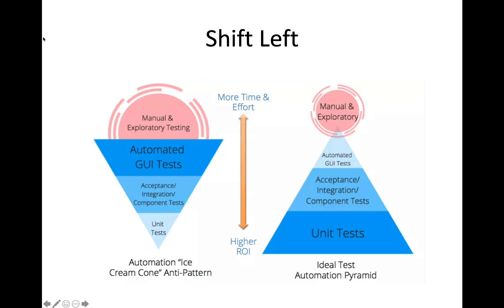You may also have some manual and exploratory testing. This idea that you can automate all testing — in some cases you can do that, but it generally is a real challenge. There's some level of testing that is still performed manually because there are certain things that only a human being can really see. For example, usability — how would you automate usability testing? A machine doesn't really know if something is usable or not. So you might have some manual testing in place just to test for usability.